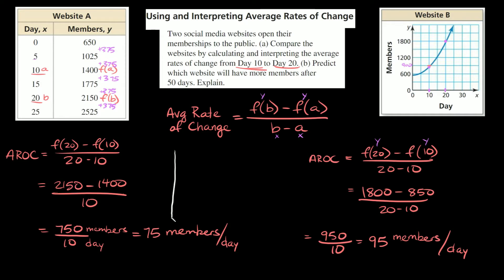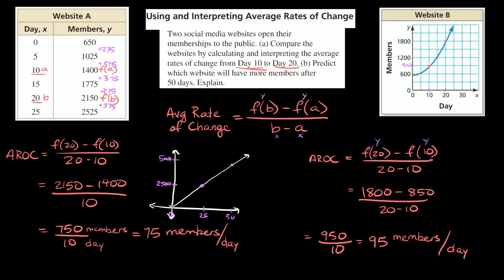If you imagined that on a graph, it would be a linear graph — a straight line growing constantly at 375 people. The latest data we have is day 25, and at day 25, website A has about 2500 members. We could even predict where we'd be: from day zero to day 25 we grew 2500 people, so to get from day 25 to day 50 — just another 25 days — this would basically double to 5000. These are just approximations, but that's how you can tell how website A is growing.